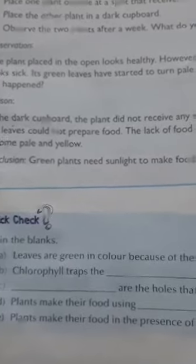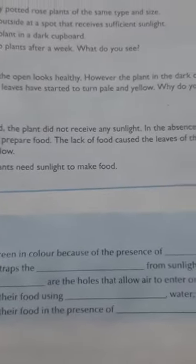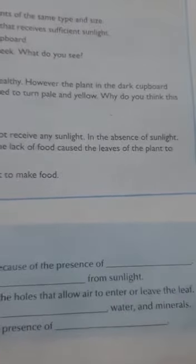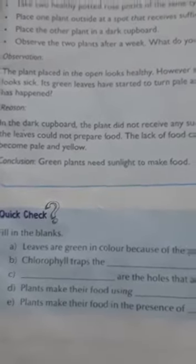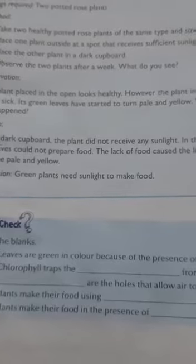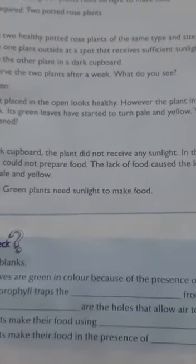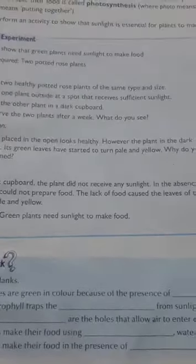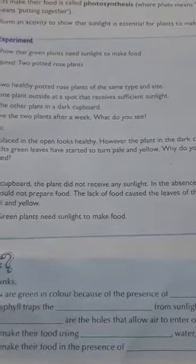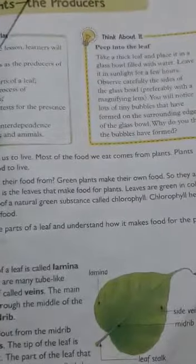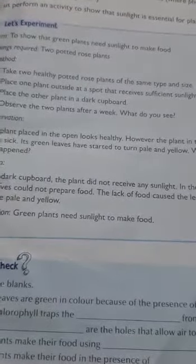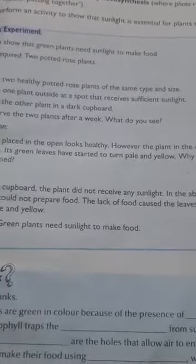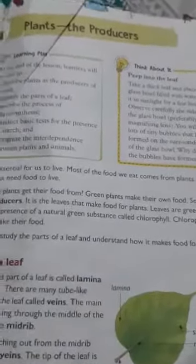In the absence of sunlight, the leaves cannot prepare food. The lack of food caused the leaves to become pale and yellow. This shows that green plants need sunlight to make food. That's it for today's video — revise it and take care, goodbye.